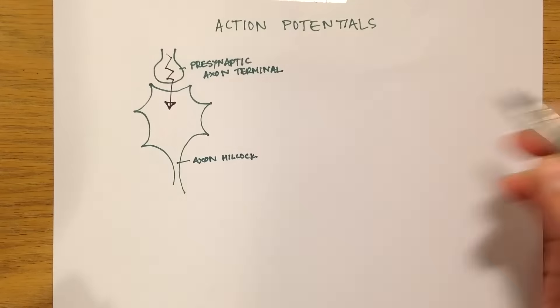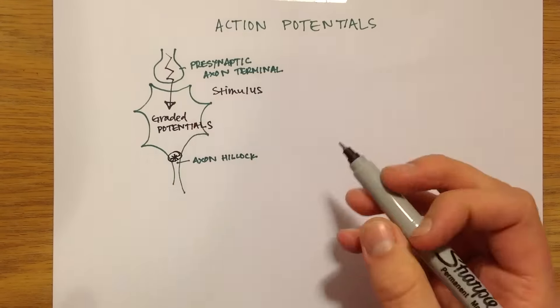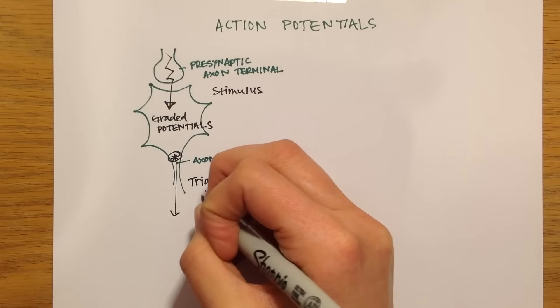The original stimulus from the presynaptic neuron needs to be big enough that by the time graded potentials reach the axon hillock, the stimulus will be above threshold.